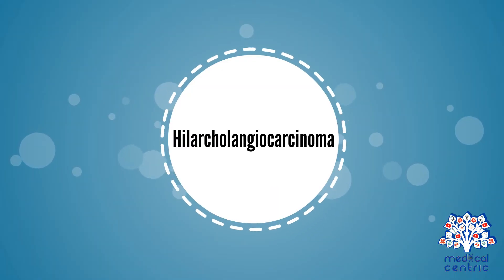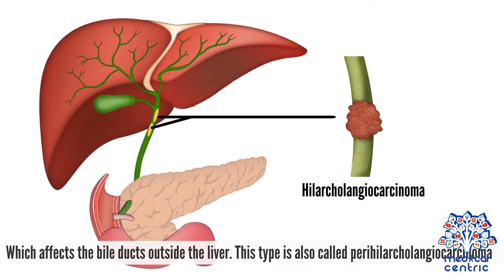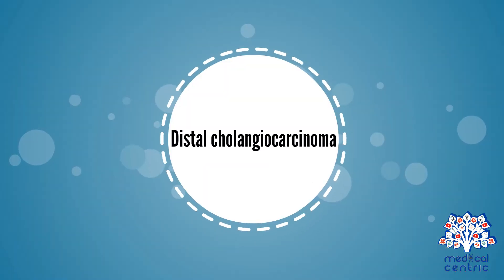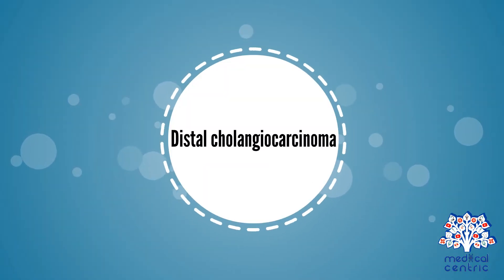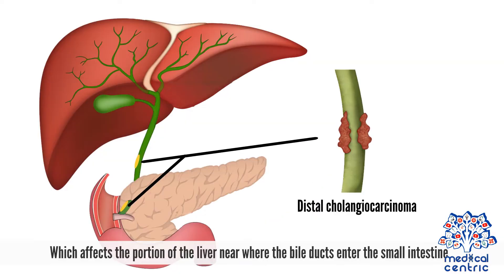Hilar cholangiocarcinoma affects the bile ducts outside the liver and is also called perihilar cholangiocarcinoma. Distal cholangiocarcinoma affects the portion of the bile duct near where the bile ducts enter the small intestine.